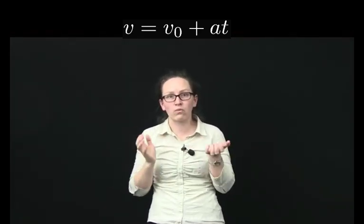Let's have a look now at where this equation comes from. So from our definition of acceleration, we said that acceleration was equal to the final velocity minus the initial velocity over the time.